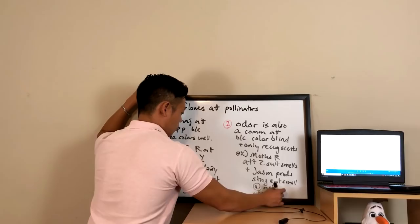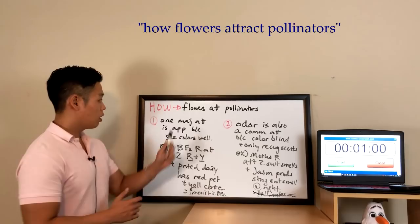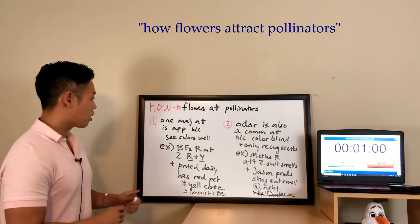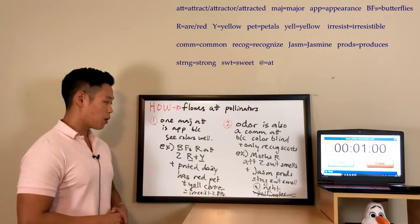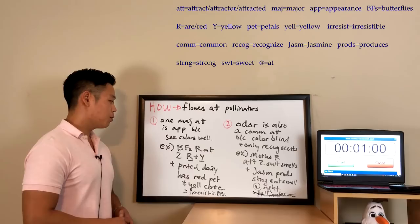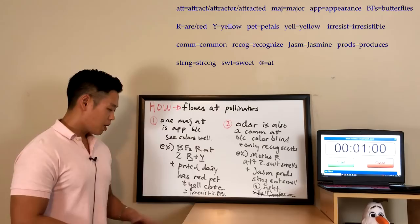The professor very kindly said 'how flowers attract pollinators,' so that's what you're going to use for the beginning and ending sentences. If this happens, please don't miss it — seize the opportunity so your first and last impressions are perfect and flawless. The first part: one major attractor is appearance because insects can see colors well; for example, butterflies are attracted to the colors red and yellow, and the painted daisy has red petals and a yellow center, making it irresistible to butterflies.